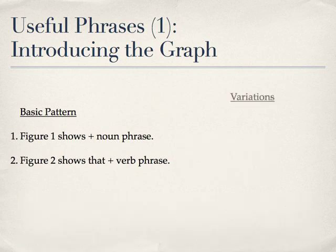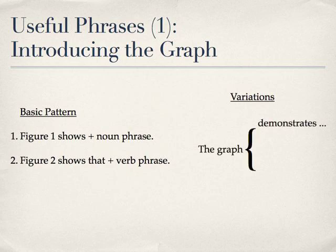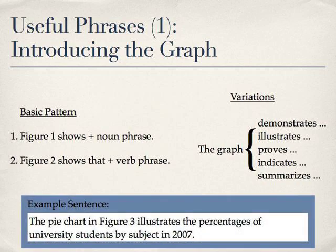There are variations of these sentences. There are other verbs we could use instead of 'to show,' which vary the meaning. How about these? The graph demonstrates, illustrates, proves, indicates, summarises. Here is an example using the variations: 'The pie chart in figure 3 illustrates the percentages of university students by subject in 2007.'